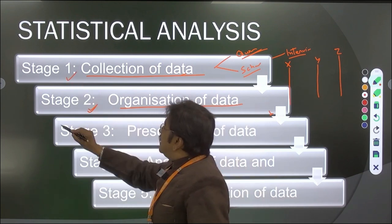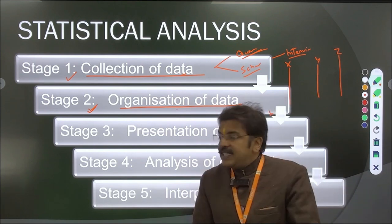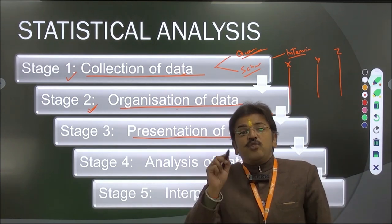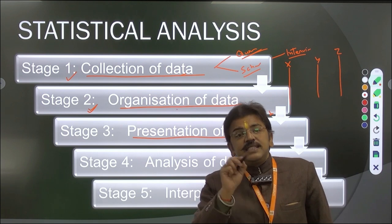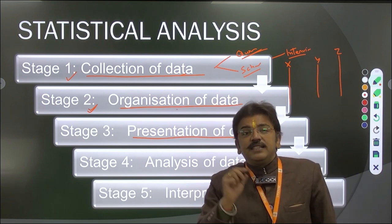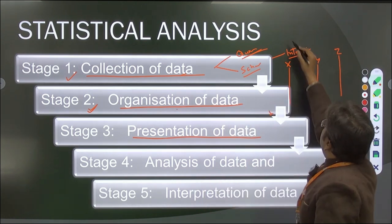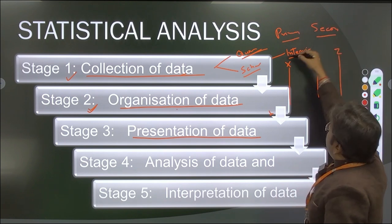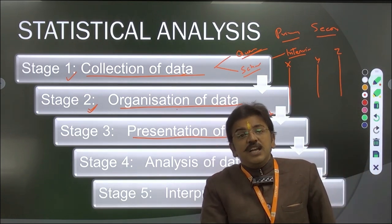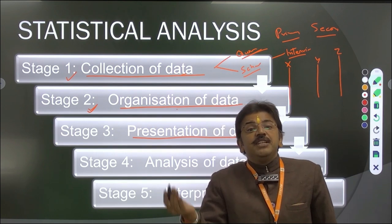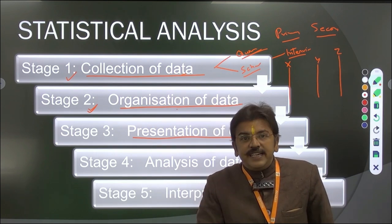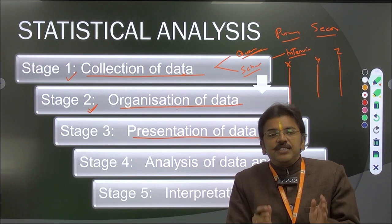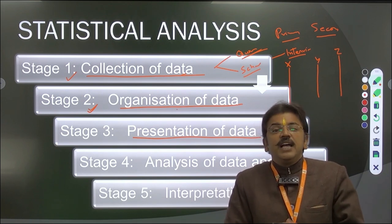Organization of data is the second step; collection is the first. In the third step, presentation of the data is required so that persons studying your work know whether data is primary or secondary. For secondary data, you must mention the source. Presentation in a simple form is necessary so the reader understands where the data comes from.